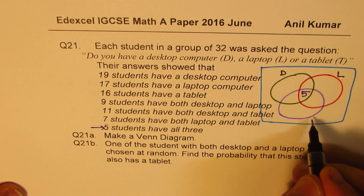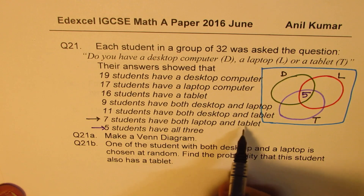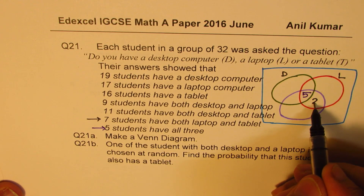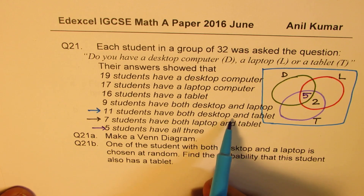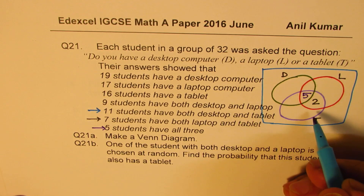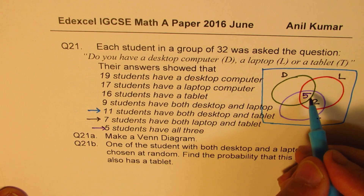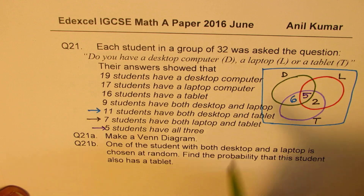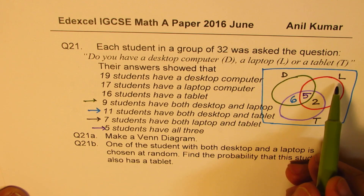7 students have both laptop and tablet, so that intersection is 7 = 5 + 2, giving us 2 in that region. 11 students have both desktop and tablet: 11 = 5 + 6, giving us 6. 9 students have both desktop and laptop: 9 = 5 + 4, giving us 4 in that region.